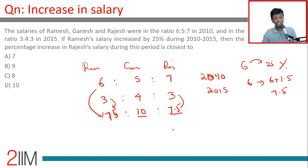The percentage increase in Rajesh's salary during this period is closest to—Rajesh's salary has gone from 7 to 7.5. 7 to 7.5, increase of 0.5 on a base of 7 or 1 by 14. One-fourteenth as a percentage, roughly 7.14%, a little more than 7%.